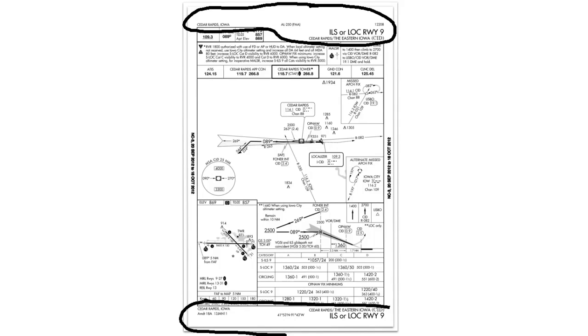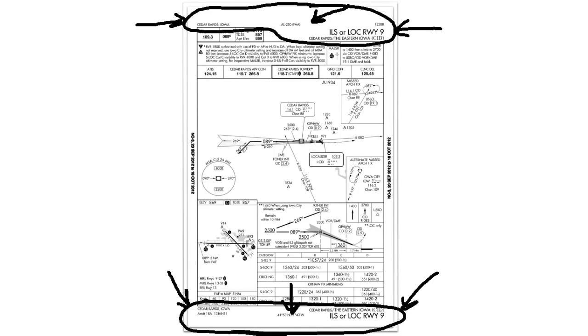The first element of an IFR approach chart is the marginal data. The marginal data can be found both at the top and at the bottom of the chart. It includes the approach name and airport name, the FAA computer identifier for the approach, the city and state of the approach, the current amendment date and number, the lat-long grid coordinates for the airport, and again in the bottom right section the name of the approach and the airport.